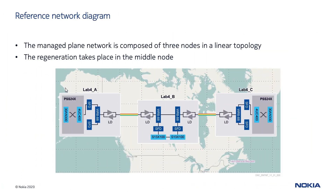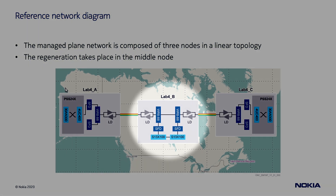The managed plane network we are using to deploy a regenerated service is composed of three nodes in a linear topology. Managed plane means that GMPLS has not been activated; in other words, the network will not automatically look for an alternative route in case of failure. Regenerated means that at a certain point, the optical signal is re-amplified, reshaped, and re-timed — the so-called 3R regeneration — to extend the optical reach between the two endpoints.